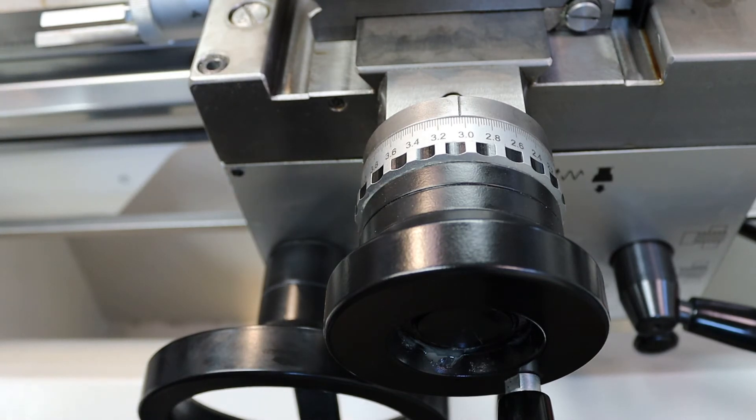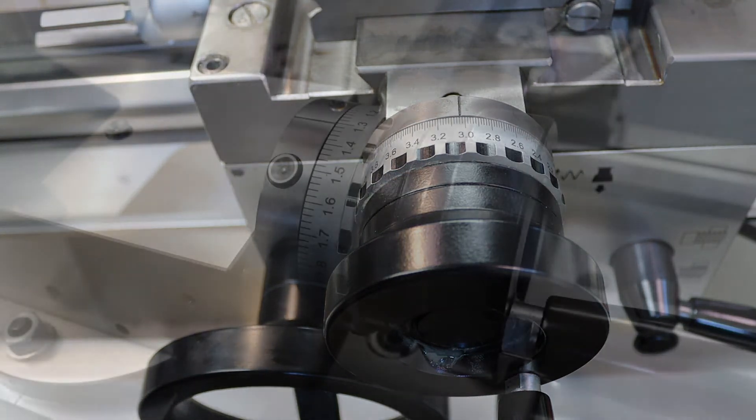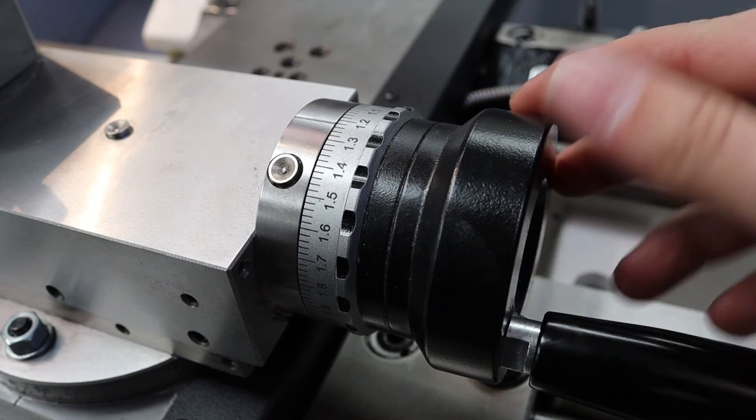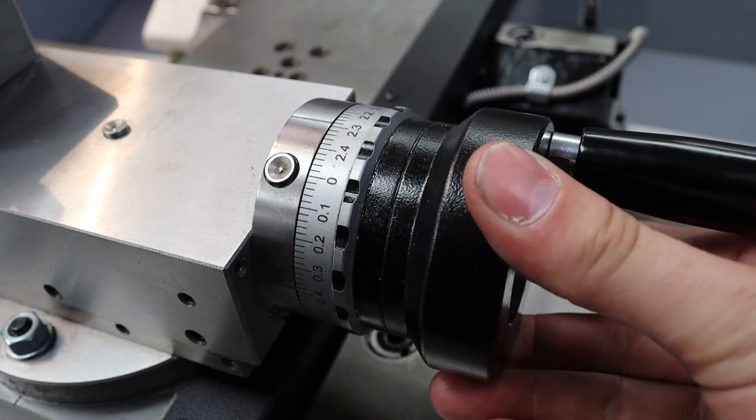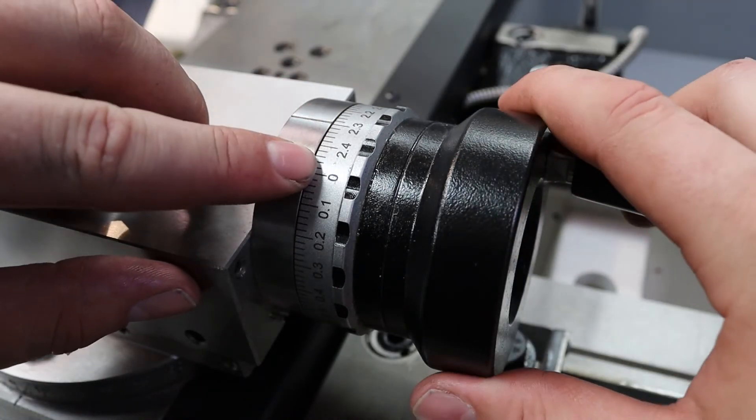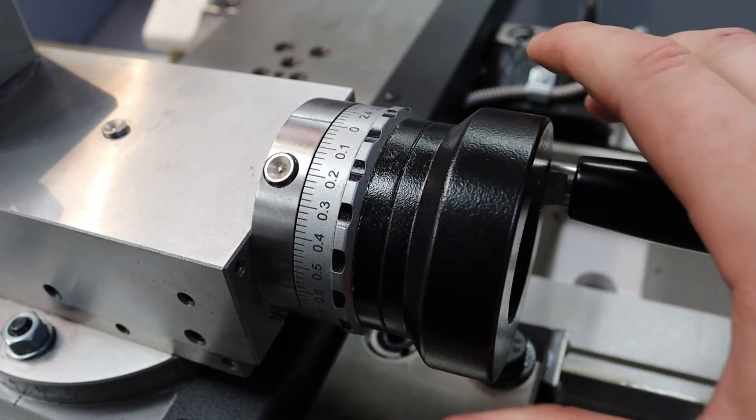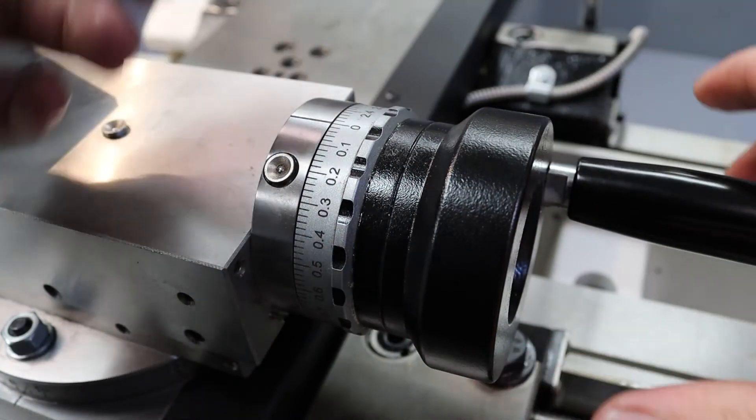And if we have a look at the cross slide, we can see we have a similar arrangement except it's a smaller handwheel. So this handwheel only has two and a half millimeters in total worth of travel per revolution.